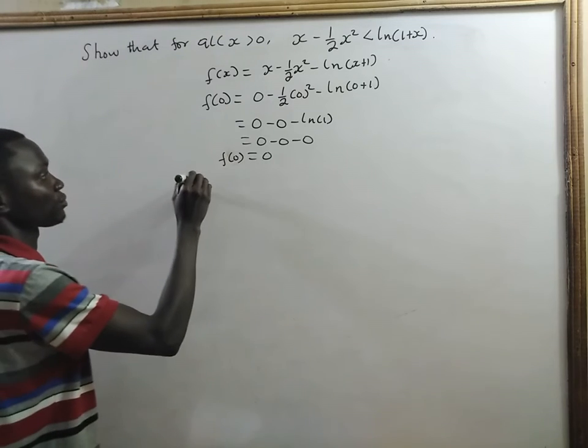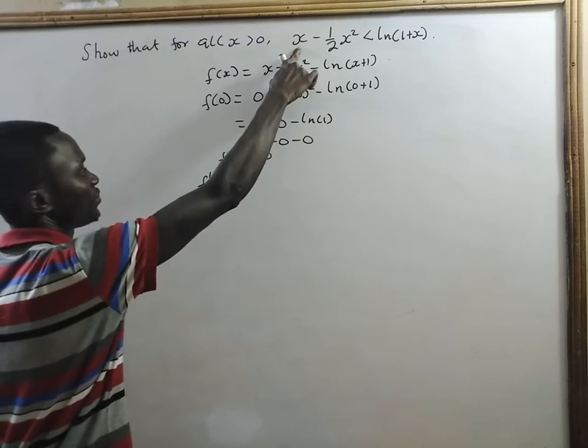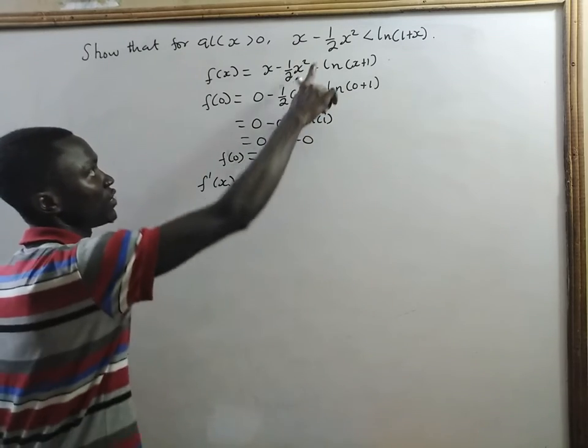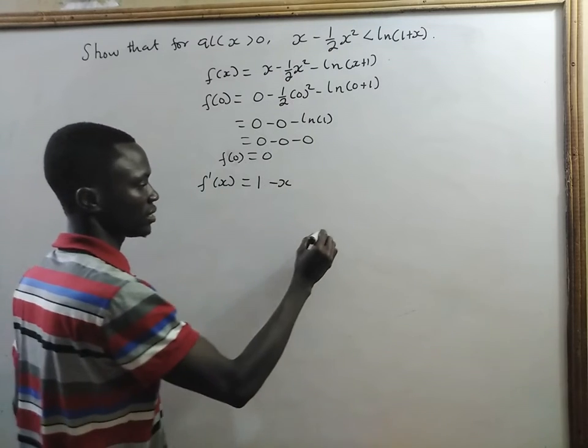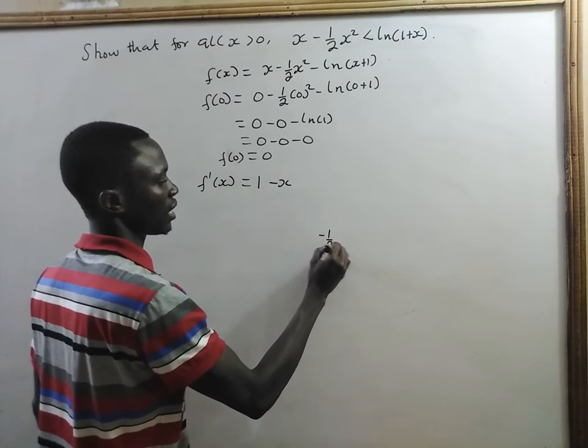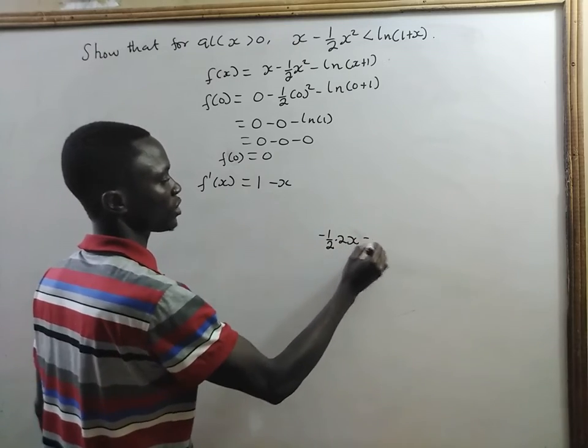Now, let's find the first derivative. f'(x) equals, if you differentiate x, you get 1. If you differentiate half of x squared, you get minus x. That is, it will be minus half times 2x and that will get minus x.